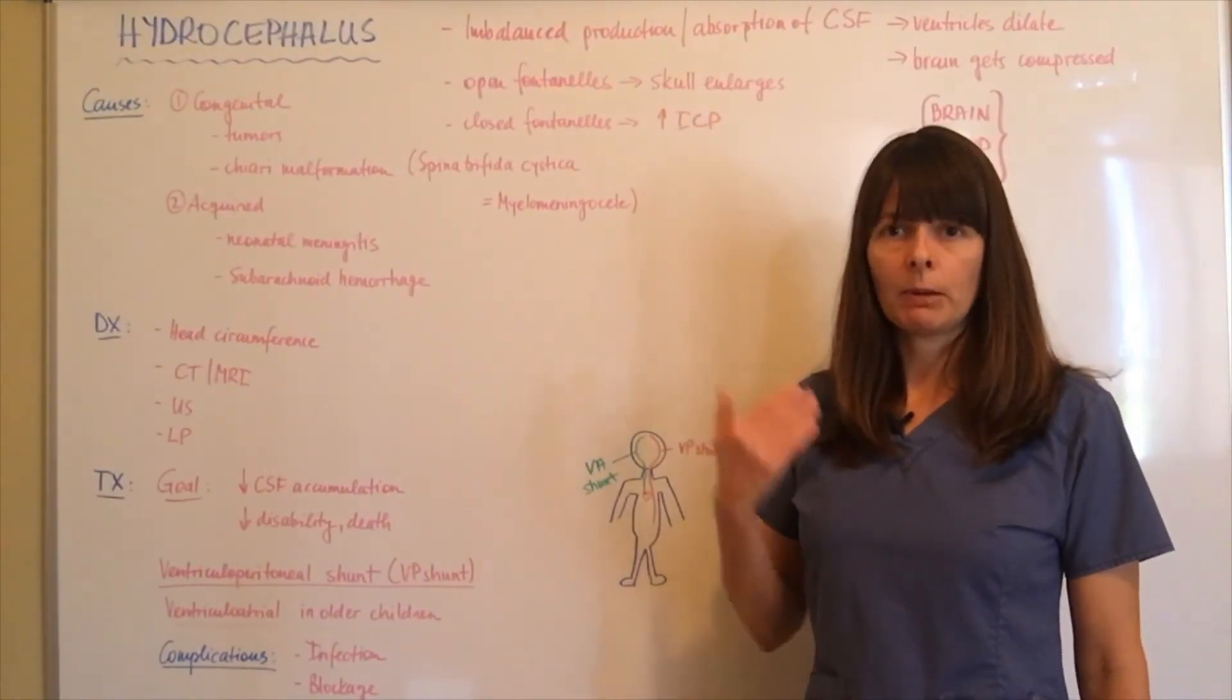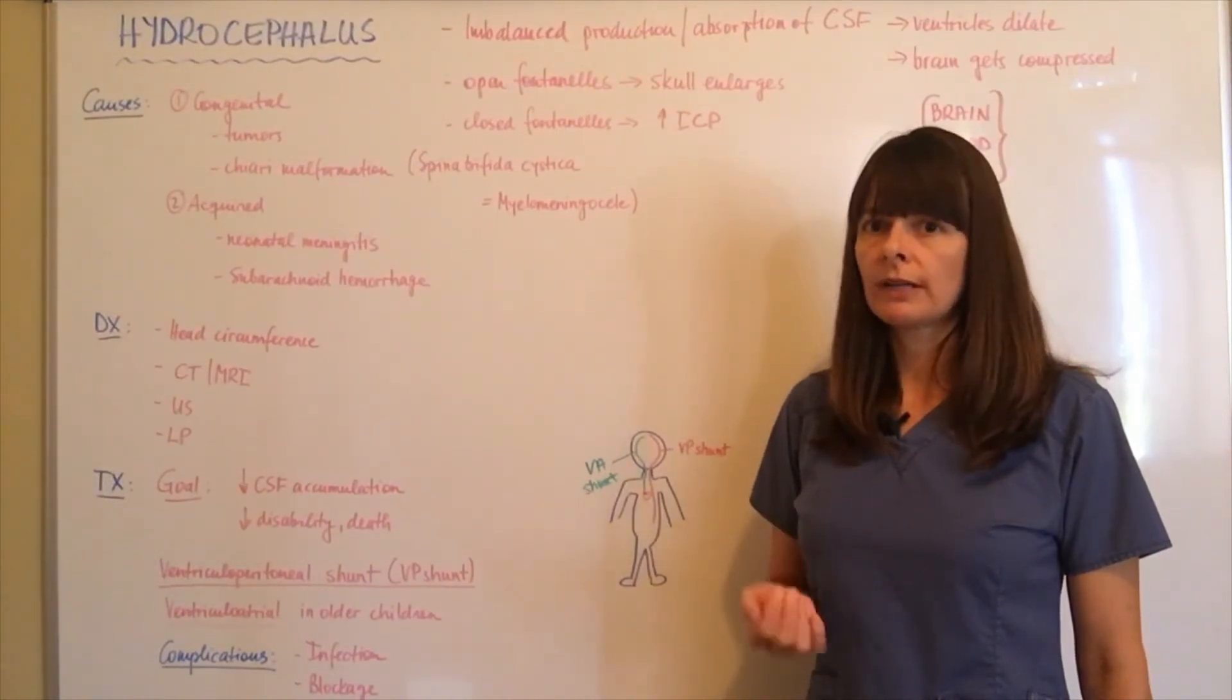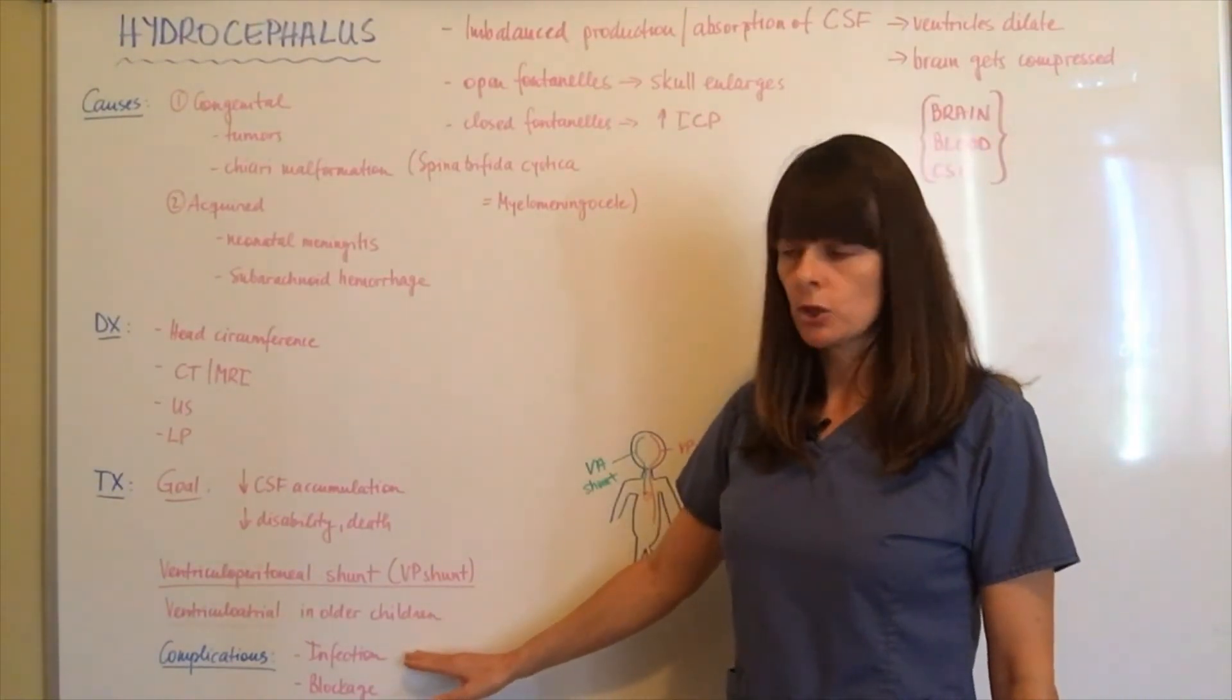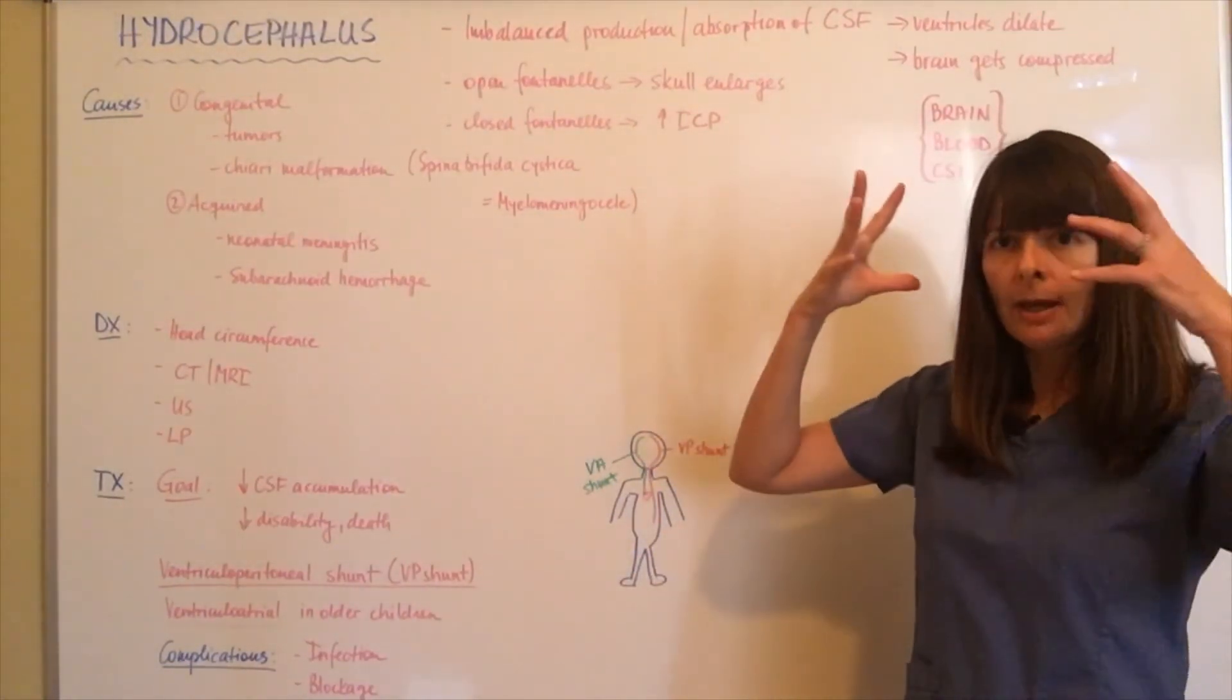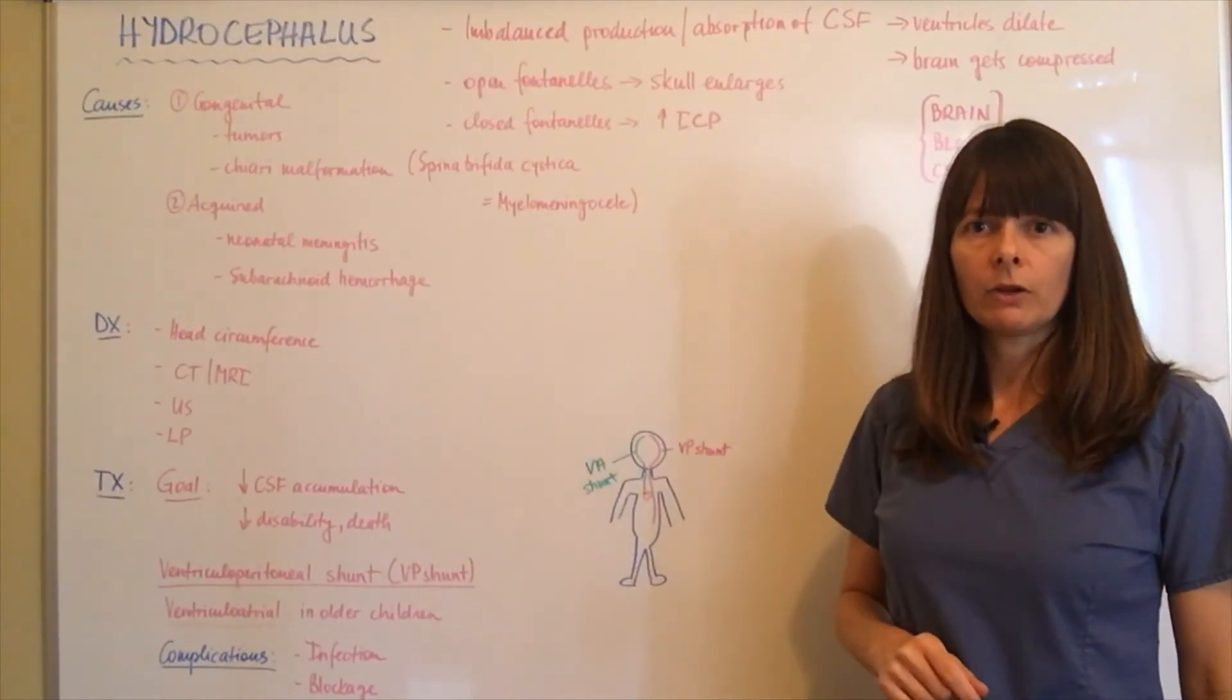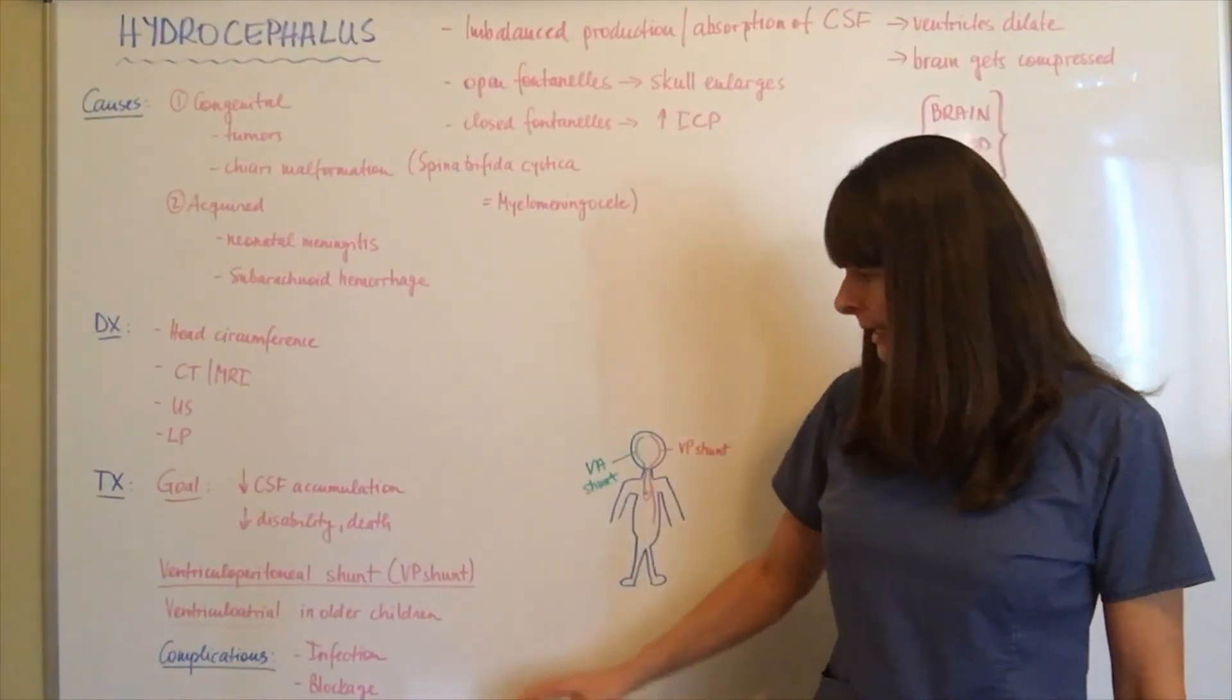You might even see adults that have a VP shunt or VA shunt implanted, brought to the hospital for altered level of consciousness. Your thoughts should be maybe there's a blockage or infection of that shunt. If the shunt is blocked, CSF is again accumulating, causing the brain to be compressed, causing altered level of consciousness and neurological deficits.